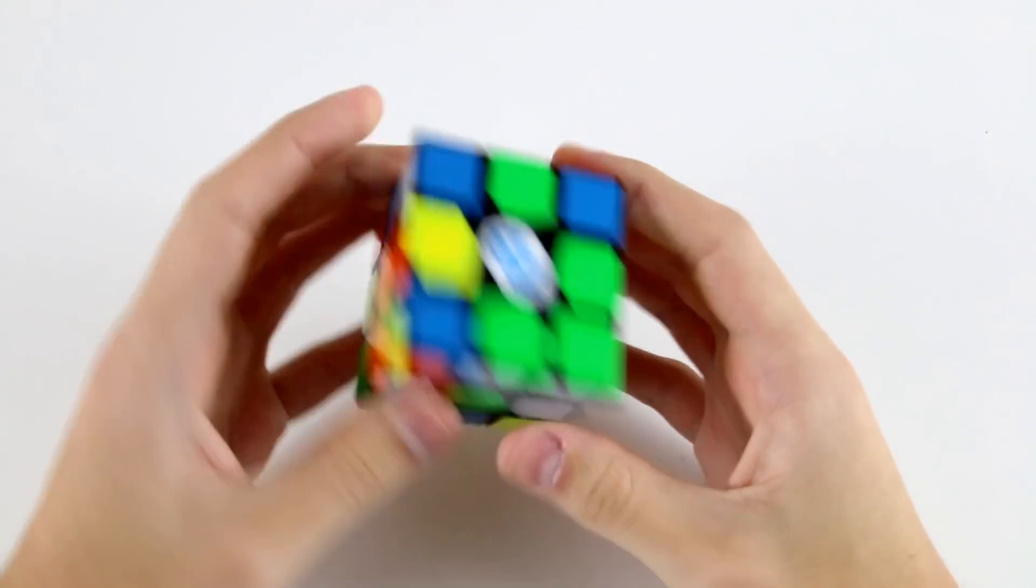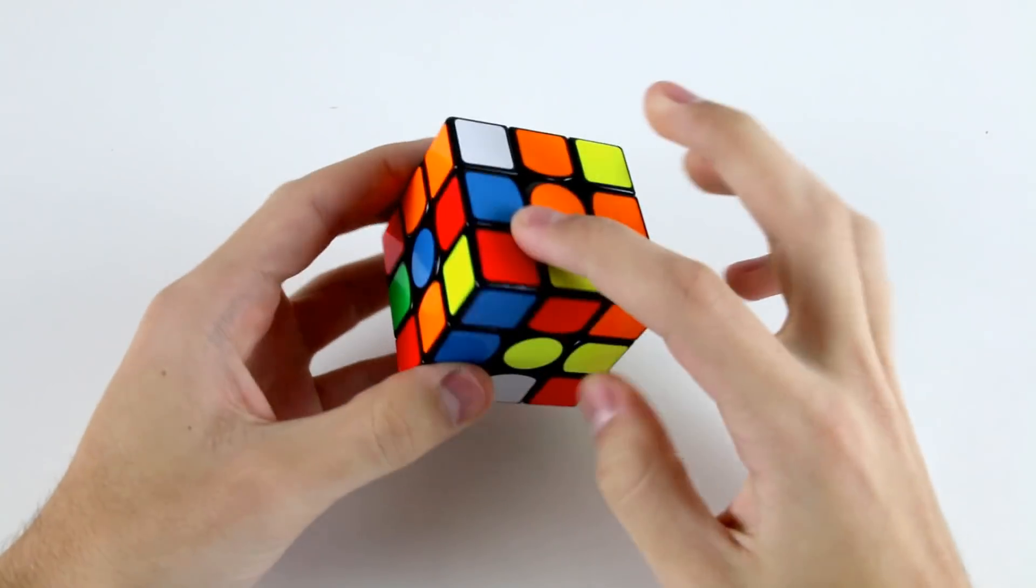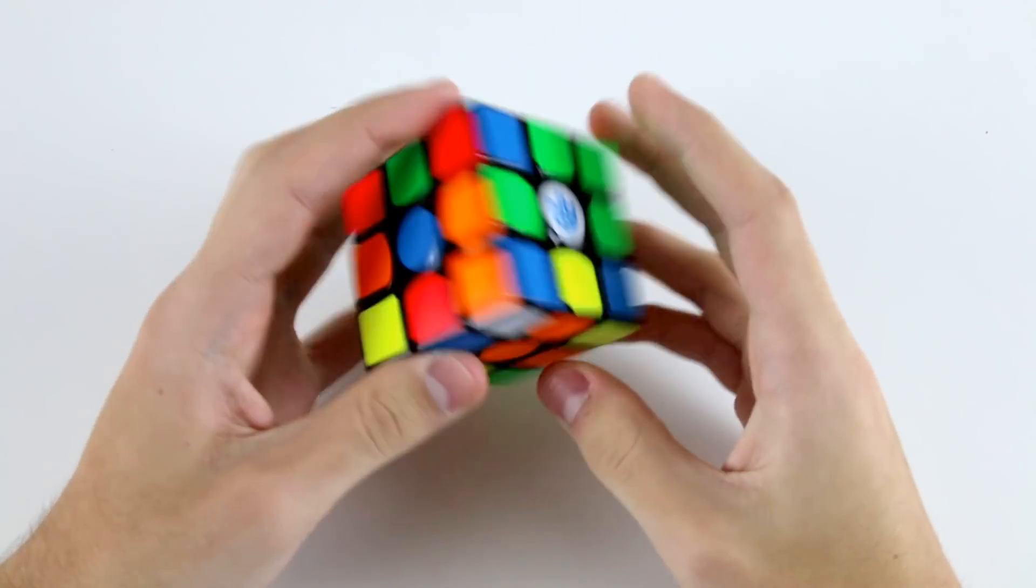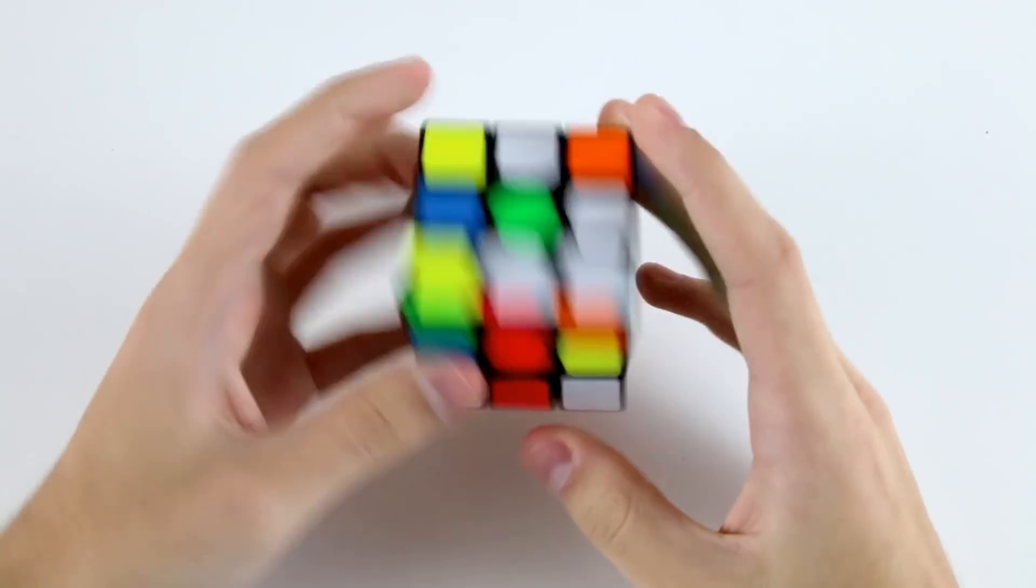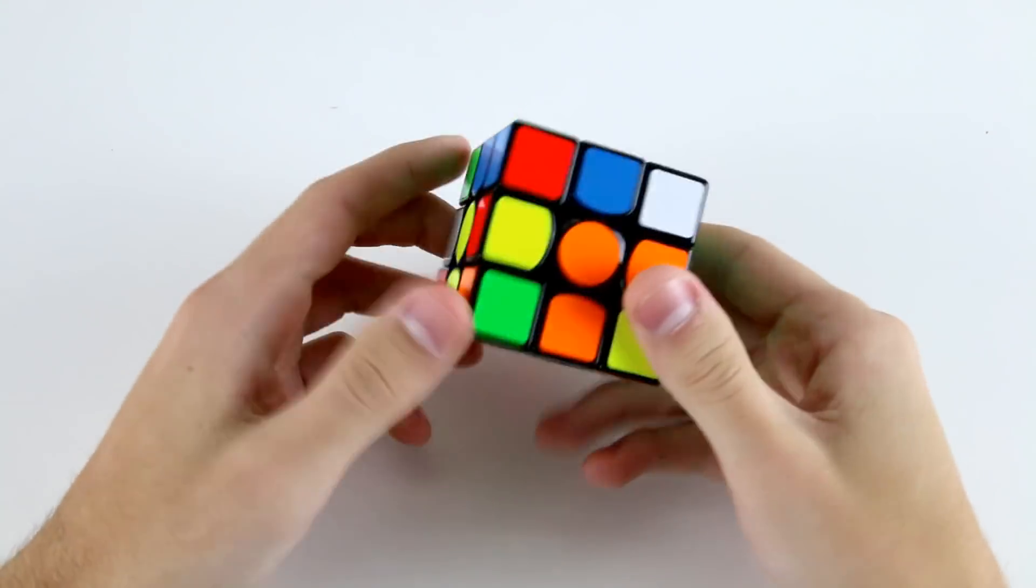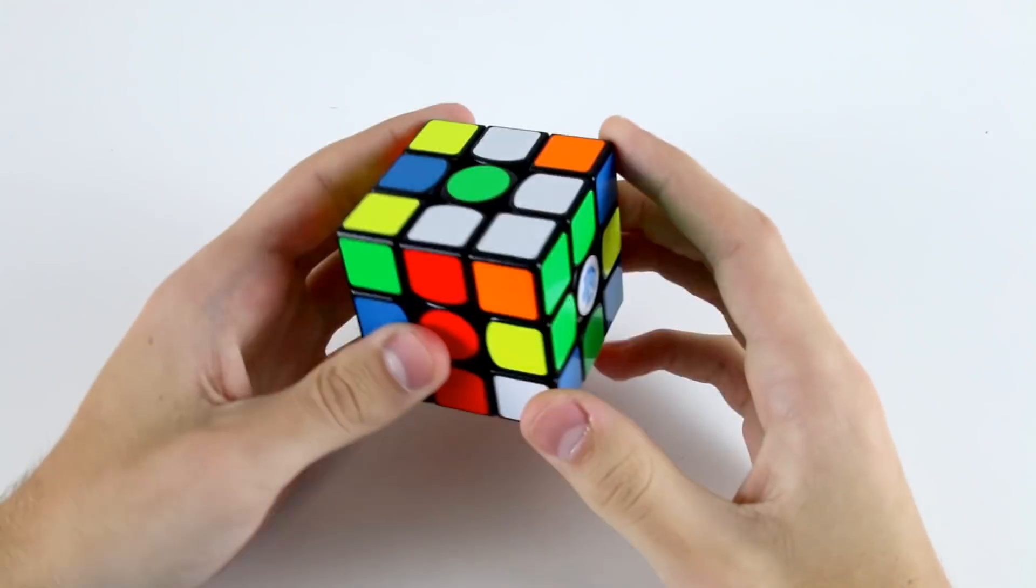The first thing when I see this scramble is that I've got two cross pieces on red but these two are misoriented up the top here so that's no good. Then the next thing I see is these two on orange and these two as well so the orange cross is going to be pretty easy. I'll do something like R'L D' R D2 R'.